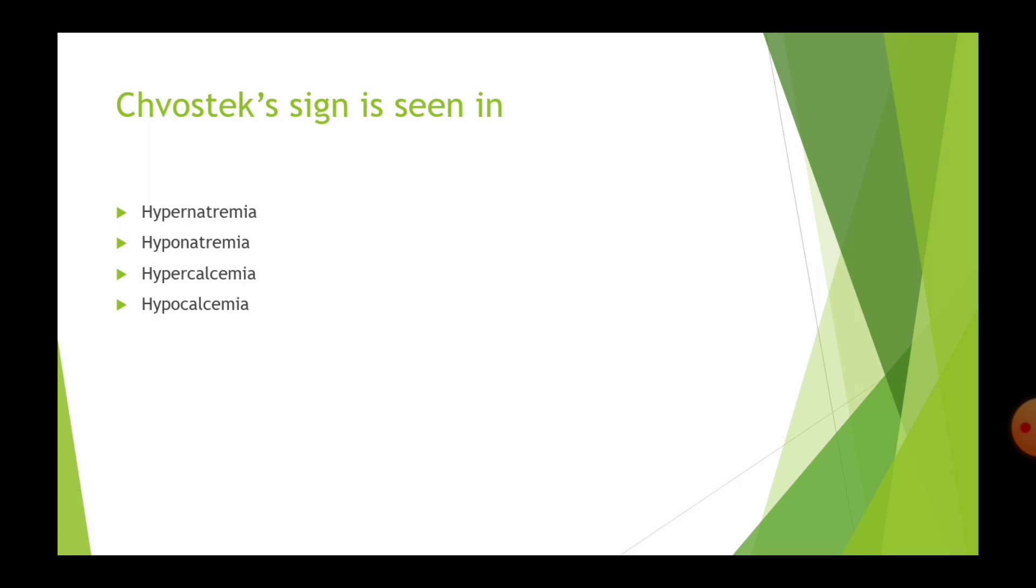In Chvostek's sign, there is twitching of facial muscles in response to tapping over the areas of facial nerve. This is due to the hypocalcemia. Hypocalcemia leads to nerve and muscle irritability. That is why you get these kind of signs. In Trousseau's sign, you can find carpopedal spasm.